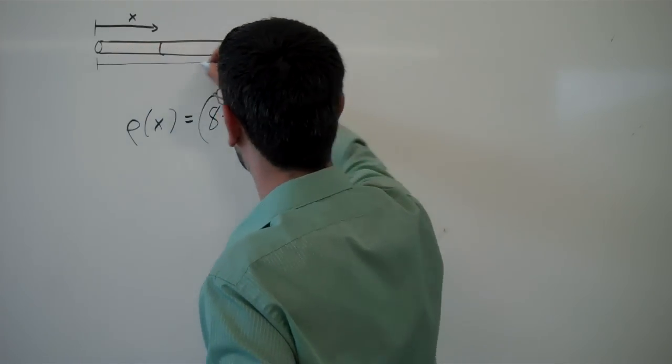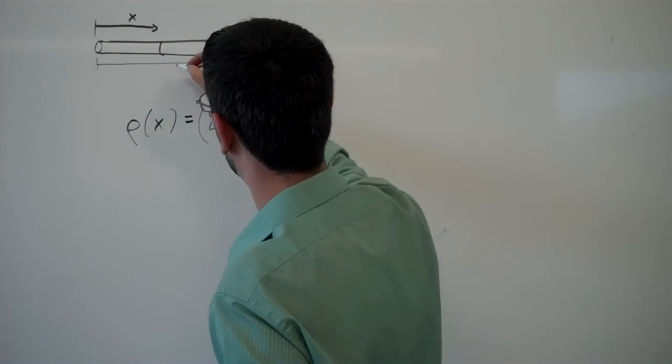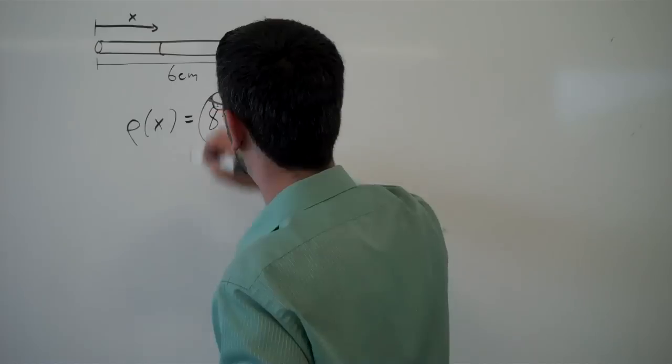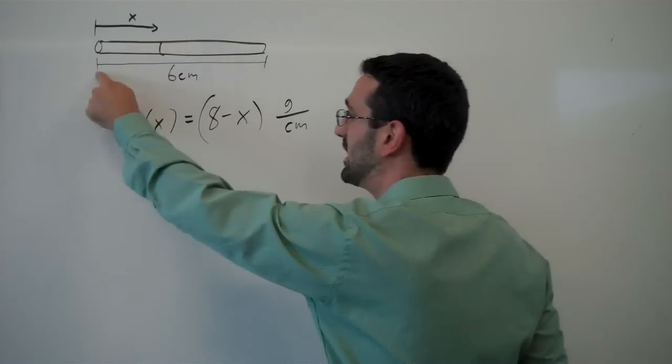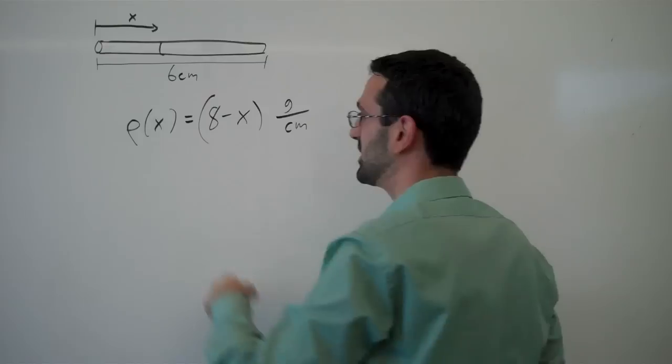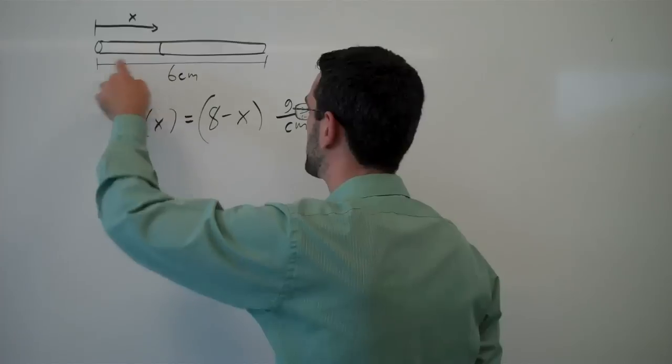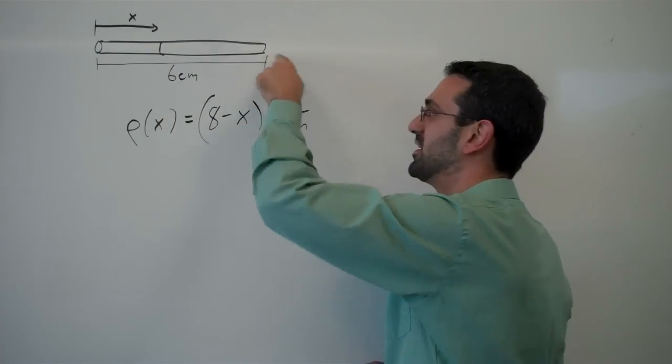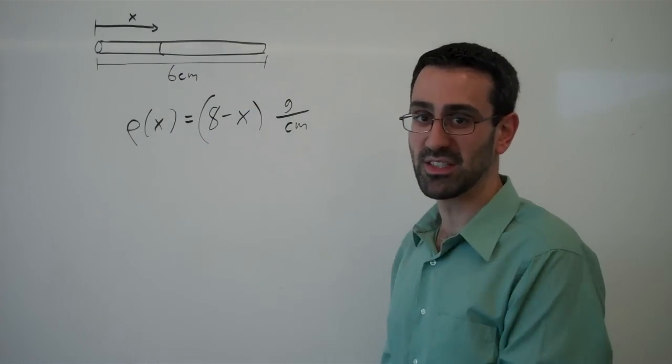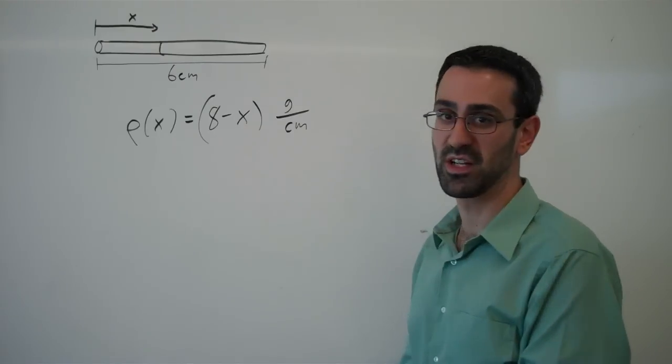Suppose this entire rod is 6 centimeters long. This is telling me at the very beginning, this end has 8 grams per centimeter, whereas on this end, the mass has decreased down to only 2 grams per centimeter.